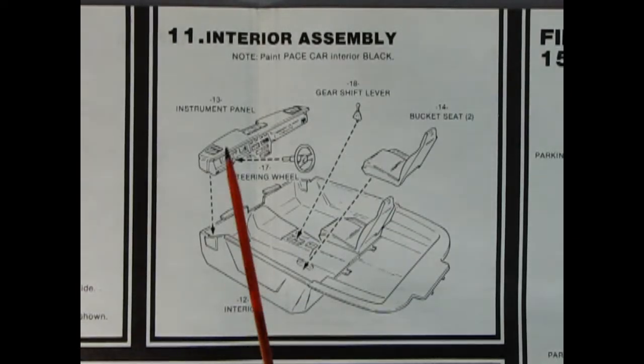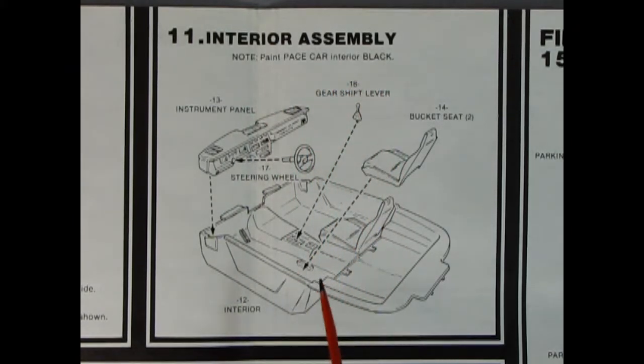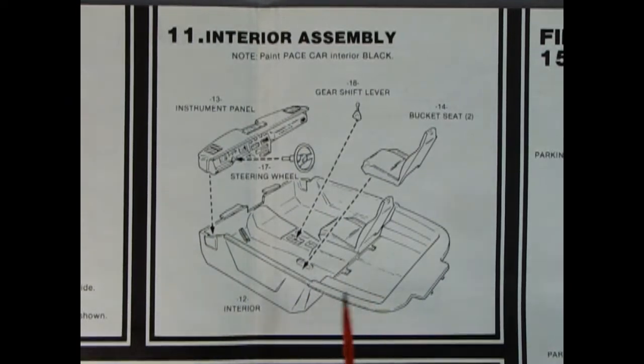Panel eleven shows our interior assembly. It says to note: paint pace car interior black. We've got our instrument panel, steering wheel, interior bucket, bucket seats, and gear shifter. One thing that's missing - if you look at the pictures of these, there's some kind of roll bar with lights on it that's supposed to be inside here, but it's not actually molded into the kit in any way, shape, or form.